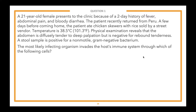A 21-year-old female presents to the clinic with fever, abdominal pain, and bloody diarrhea. The patient recently returned from Peru. A few days before coming home, she ate chicken skewers with rice sold by a street vendor. Temperature is 38.5°C (101.3°F). Physical examination reveals the abdomen is diffusely tender to deep palpation but negative for rebound tenderness. A stool sample is positive for a non-motile gram-negative bacterium.